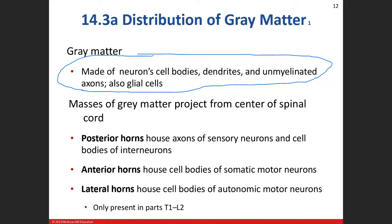In the peripheral nervous system, the myelin sheath is produced by the Schwann cells, or neurolemocytes. When we talk about gray matter in the spinal cord, remember in the brain the gray matter is on the outside and white matter is on the inside. We flip-flop that in the spinal cord — white matter is more on the outside and gray matter is more on the inside, looking like a gray H or butterfly shape.